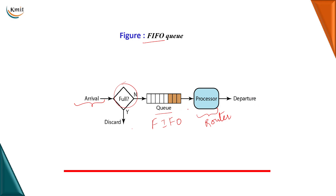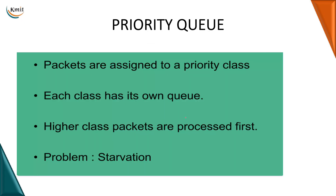So what is the problem with first in first out scheduling here? If there is a most important packet coming but it has arrived late, it has to wait till its turn comes because it is a first in first out technique. So what we do is we go with the second technique called priority queue technique. In this technique, every packet is being assigned a priority class. Every priority class will have its own queue, and higher priority packets are being processed first.